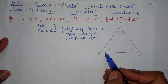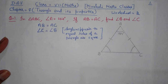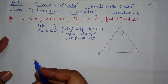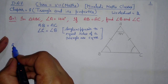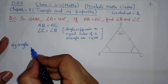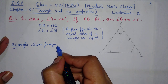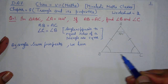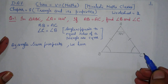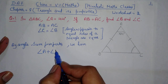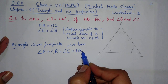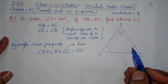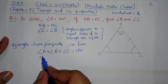Now both your angles are equal. Next we will use the angle sum property — the sum of all three angles in a triangle is 180 degrees. So we write: by angle sum property, we have angle A plus angle B plus angle C is equal to 180 degrees. The reason is angle sum property. Now the value of angle A is given as 44 degrees.